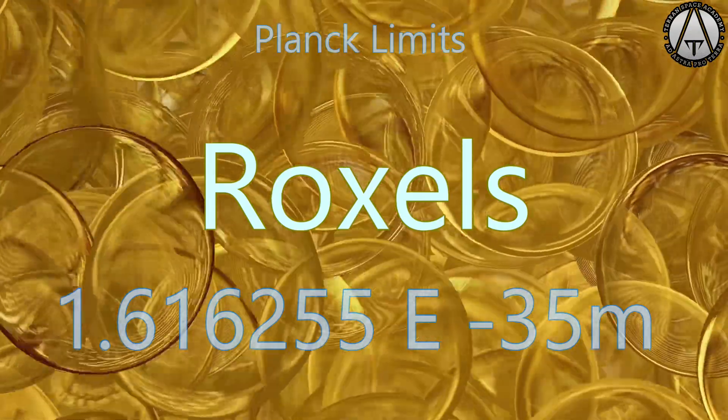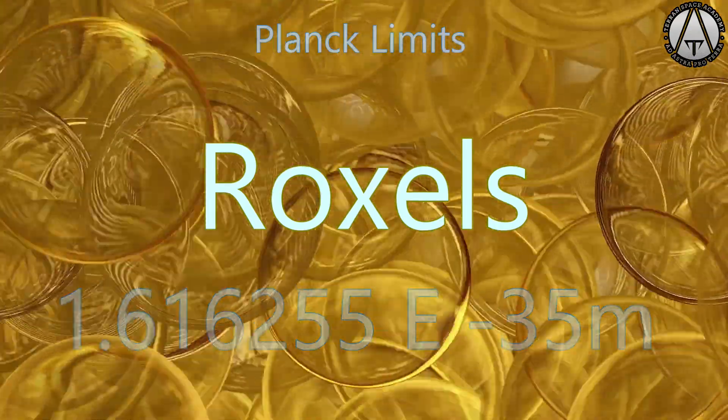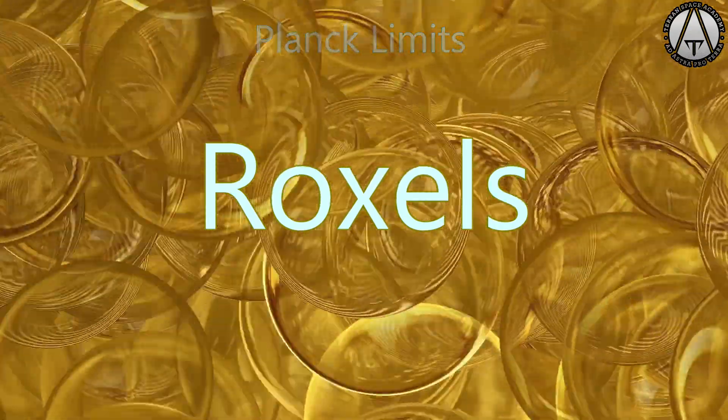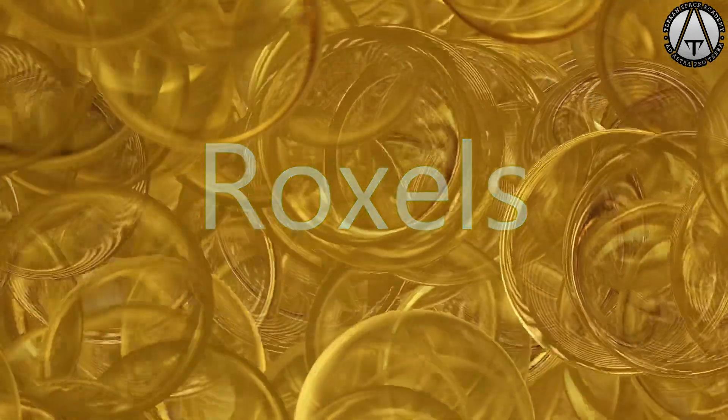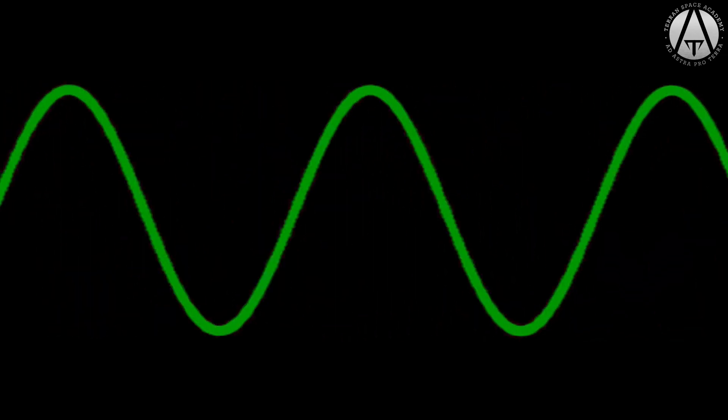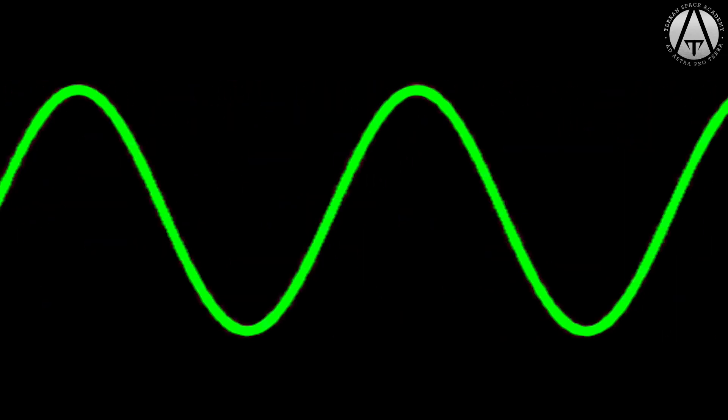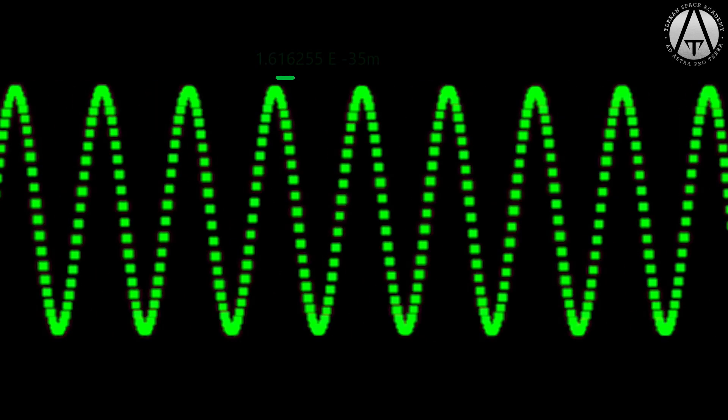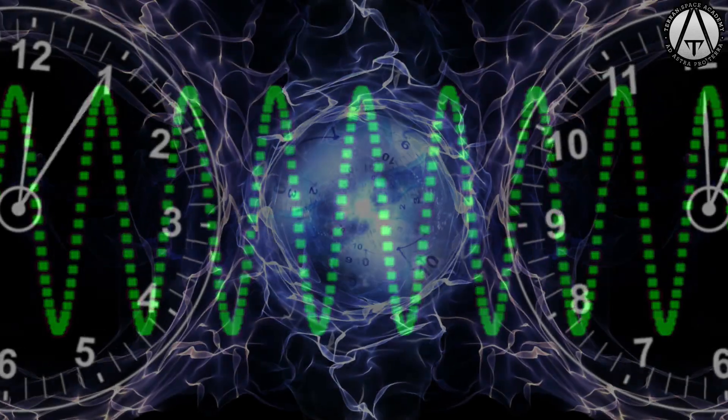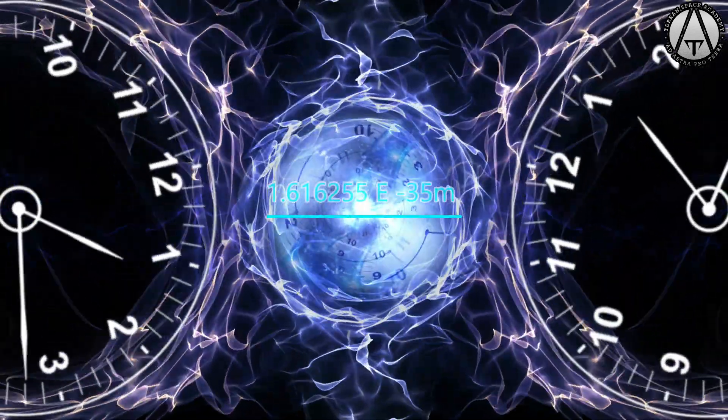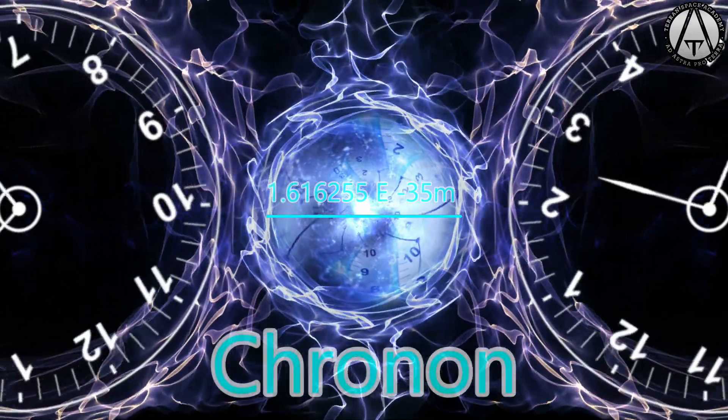Let's call it a roxel for reality voxel. Just because I don't think anyone else has and it sounds cool. Time itself can also be defined by this length. The Planck length limits how small a wavelength can be. This is the most powerful any gamma ray can be and sets the time limit to reality, as the time it takes to travel this distance is the smallest piece of time possible. I like the term chronon for this limit.